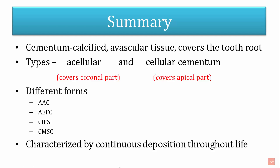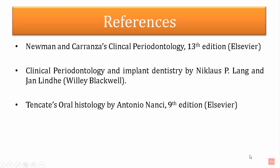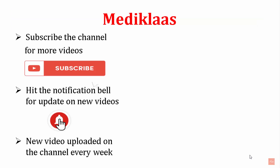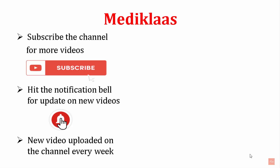To summarize: cementum is a calcified avascular tissue covering the tooth root. There are two major types — cellular and acellular cementum — and four forms: acellular afibrillar, acellular extrinsic fiber, cellular intrinsic fiber, and cellular mixed stratified cementum. Cementum is characterized by continuous deposition throughout life. A practice exercise with MCQs is linked in the description. Thank you for watching — please subscribe to the channel and have an amazing week.